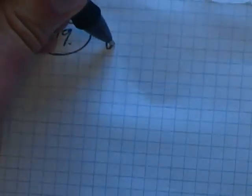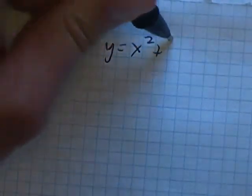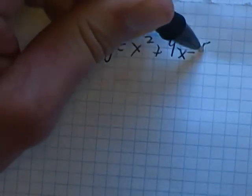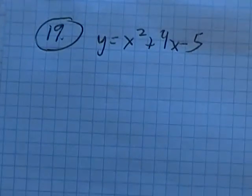This is problem 19 from the practice test for Math 98. On this problem we're supposed to graph it and identify the x-intercept, y-intercept, and the vertex. The equation is y equals x squared plus 4x minus 5. So let's do this thing.